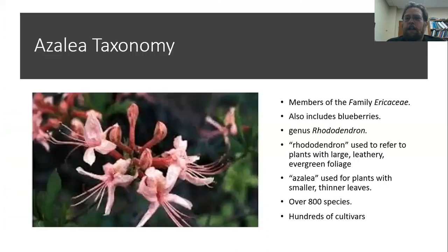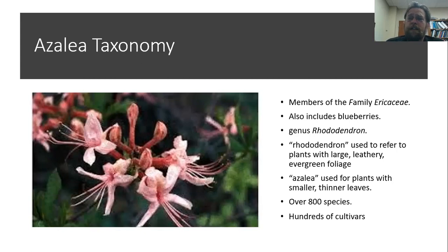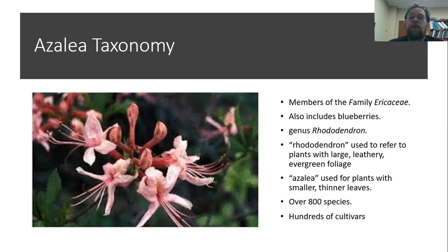I always like to start with a little basic information about what azaleas are. Azaleas are a member of the family Ericaceae, which includes other popular landscape plants like the blueberry. All of these are in the genus Rhododendron. When we use the word rhododendron, we generally refer to plants that have large, leathery evergreen leaves, whereas azaleas tend to have smaller and thinner leaves — though both really are in that genus Rhododendron.